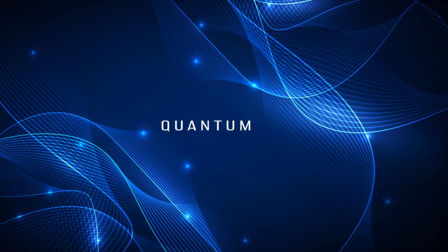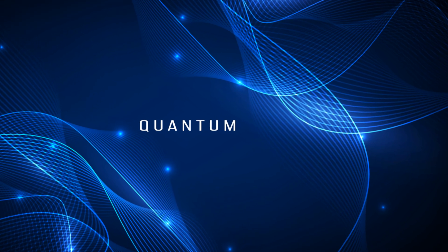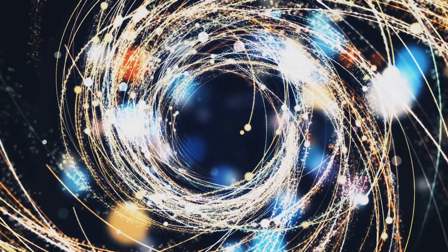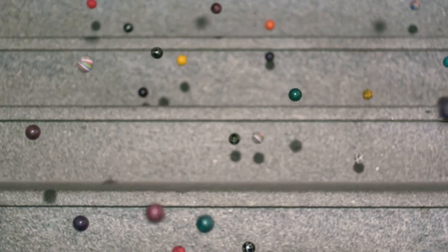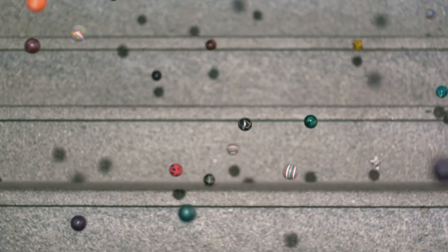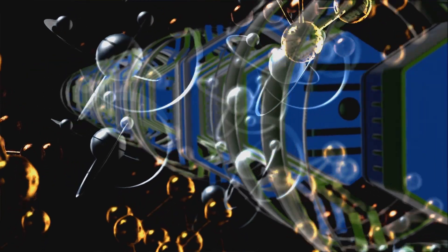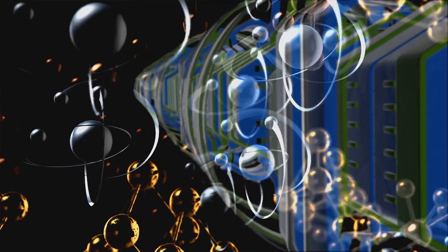This guiding hand is the quantum potential, a concept central to pilot wave theory. Imagine a landscape of hills and valleys, representing the ebb and flow of energy in the quantum realm. This landscape is the quantum potential, and it exerts a subtle but constant influence on the particles that navigate its terrain. Like marbles rolling down a slope, particles are drawn towards regions of low potential and repelled by regions of high potential. But the quantum potential is not just a static landscape. It's a dynamic entity, constantly shifting and evolving in response to the particles it guides. This intricate dance between particle and potential gives rise to the bizarre and often counterintuitive behavior observed in the quantum world.